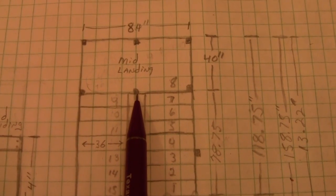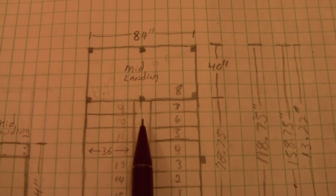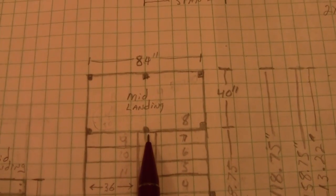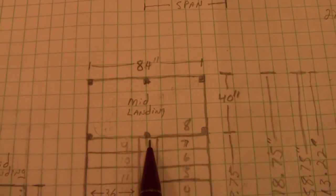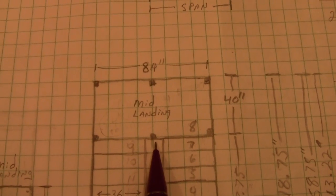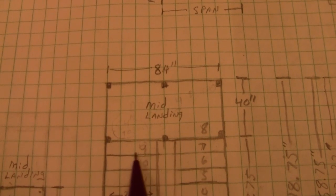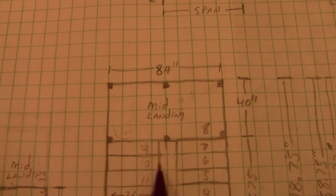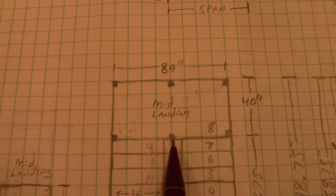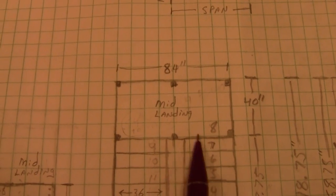But in my case, if it's a switchback, you want to have some extra room. So, it should be at least a foot wider than the stairs that are coming onto it and going off of it. So, with 6 foot being in the stairs, then I need at least 7 foot width on my landing. So, that's why I've decided to make it 84 inches wide.